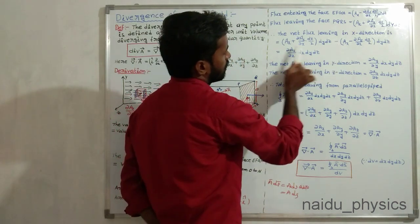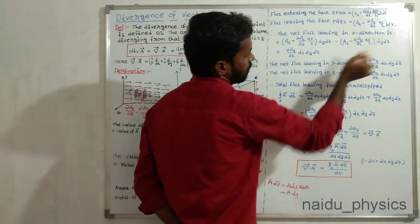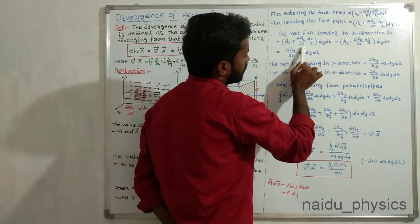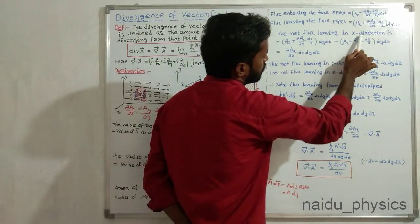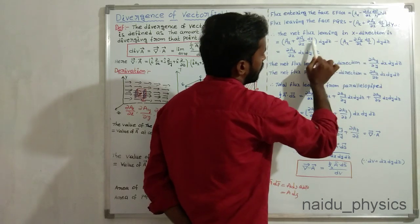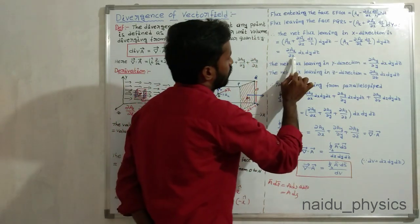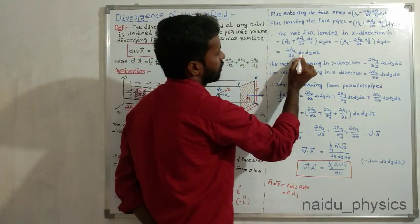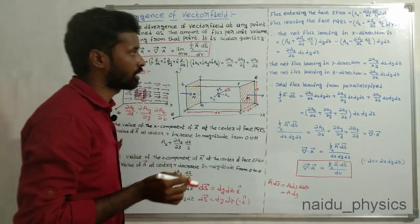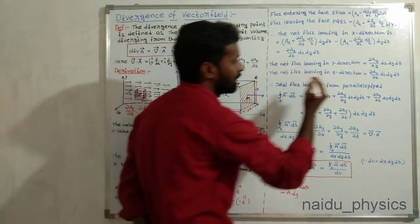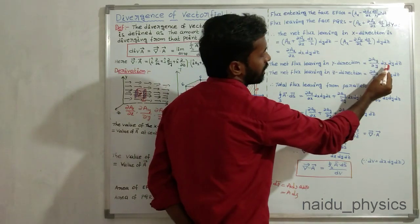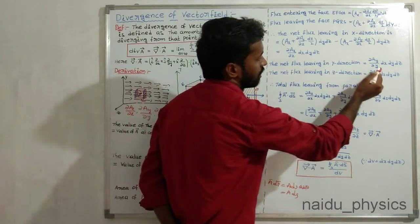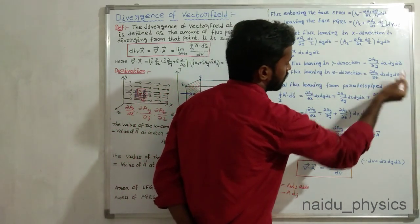Computing the net flux: the +Ax and −Ax terms cancel, and the two (∂Ax/∂x)(dx/2) terms add together. Therefore, the net flux leaving in the x-direction is (∂Ax/∂x) dx dy dz. Similarly, the net flux leaving in the y-direction is (∂Ay/∂y) dx dy dz, and the net flux leaving in the z-direction is (∂Az/∂z) dx dy dz.